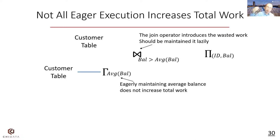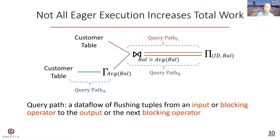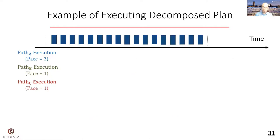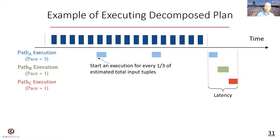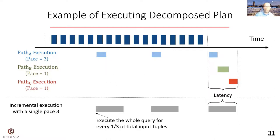Therefore, we consider decomposing the query into smaller pieces and executing them at different frequencies — some lazily, some eagerly. Specifically, we decompose a query into query paths. A query path is a dataflow that flushes tuples from one input or blocking operator to the output or the next blocking operator. We assign each query path a pace, representing how many times we execute that query path. The higher the pace, the more eagerly we execute it. For example, pace 3 means we start one execution for every one-third of the total estimated input tuples. Compared to existing approaches using a single pace, we are able to lower the total work while achieving similar latency.